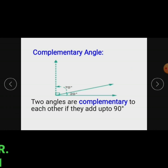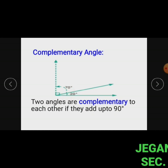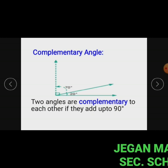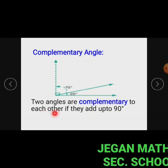Complementary angles: two angles are complementary to each other if they add up to 90 degrees. For example, 70 plus 20 equals 90 degrees, so 70 degrees is the complementary angle of 20 degrees, and 20 degrees is the complementary angle of 70 degrees. The two angles 70 and 20 are complementary to each other.